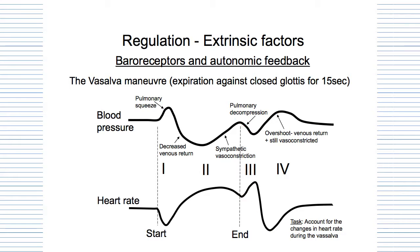There's an inverse relationship, and that's exactly what we spoke about in the previous slide when it came to the baroreceptor reflex. Now that we understand the baroreceptor reflex, we can explain why the heart rate is decreasing and increasing, because we know the relationship between blood pressure and heart rate.